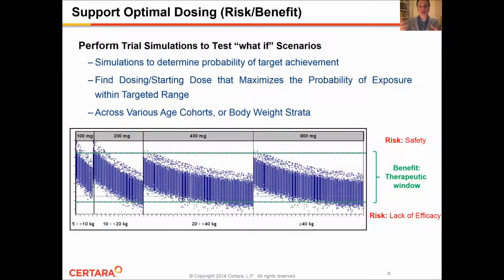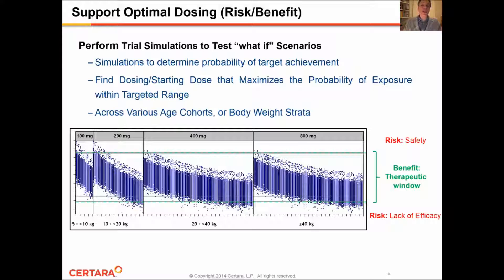Once we have a drug model and a patient model, we can apply this model to perform simulations and test what-if scenarios. These types of simulations are quite helpful to assess optimal starting dose and maintenance dose that will maximize the probability of obtaining the required exposure in order to optimize the efficacy and safety of the product. Here on the slide, we are presenting four panels representing different dose levels selected as a function of different body weight cohorts. We can clearly see that the proposed dosing scenarios result in concentrations within the therapeutic window of the product, while minimizing the risk of overdosing patients and also minimizing the risk of subtherapeutic exposure, which would be associated with a lack of efficacy.